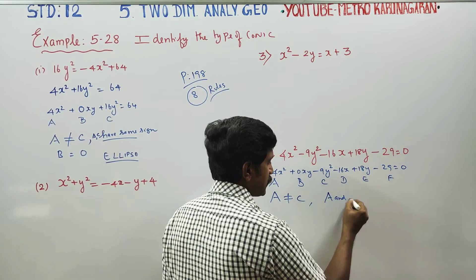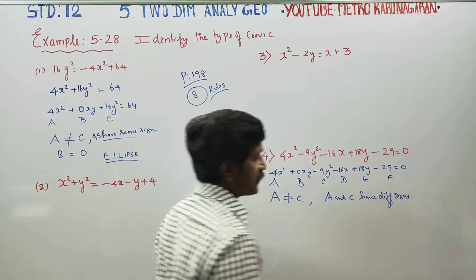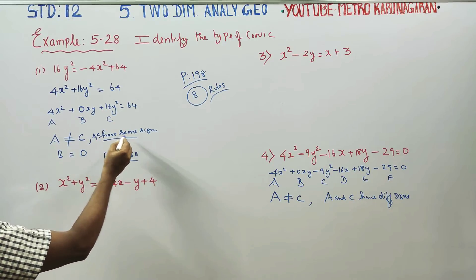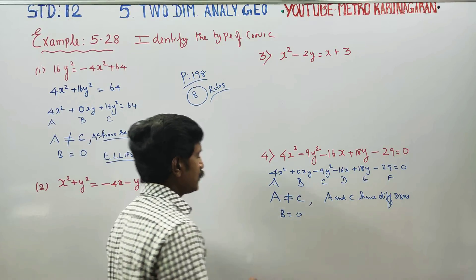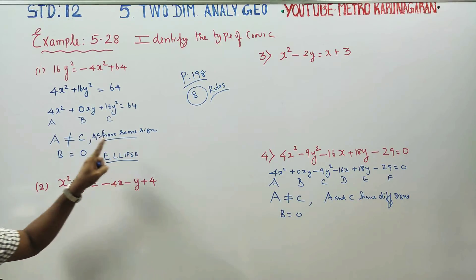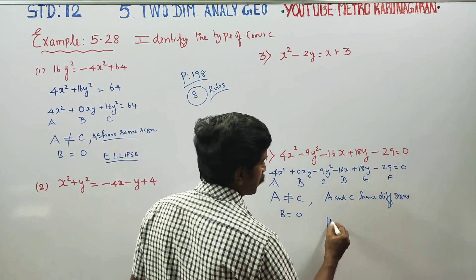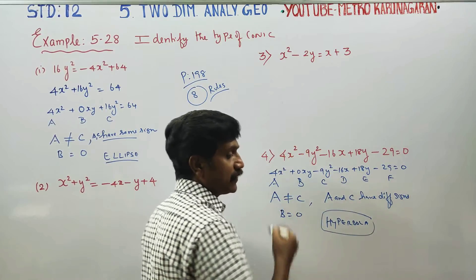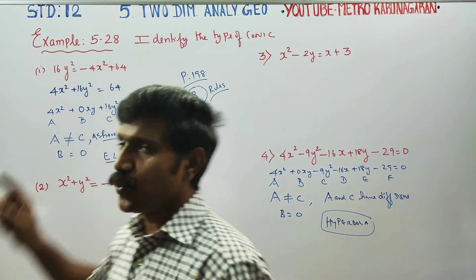Here, a is not equal to c — the coefficient of x square is not equal to the coefficient of y square. Also, a and c have different signs. And b is equal to 0. With different signs and b equal to 0, this conic represents a hyperbola.